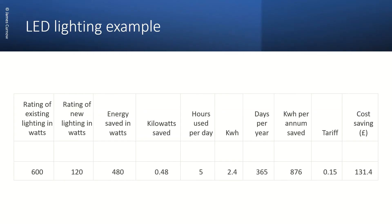Here is an example of how we can calculate the energy saving and present it in a way that could be used for a presentation or a business case. I have used the same scenario for the lighting in the house I mentioned a moment ago. Using a spreadsheet, I've put the value for existing lighting in watts. Then if we imagine that we are going to change the lamps for LED lamps which are 10 watts each, this would reduce the load to 120 watts with a saving of 480 watts or 0.48 kilowatts.